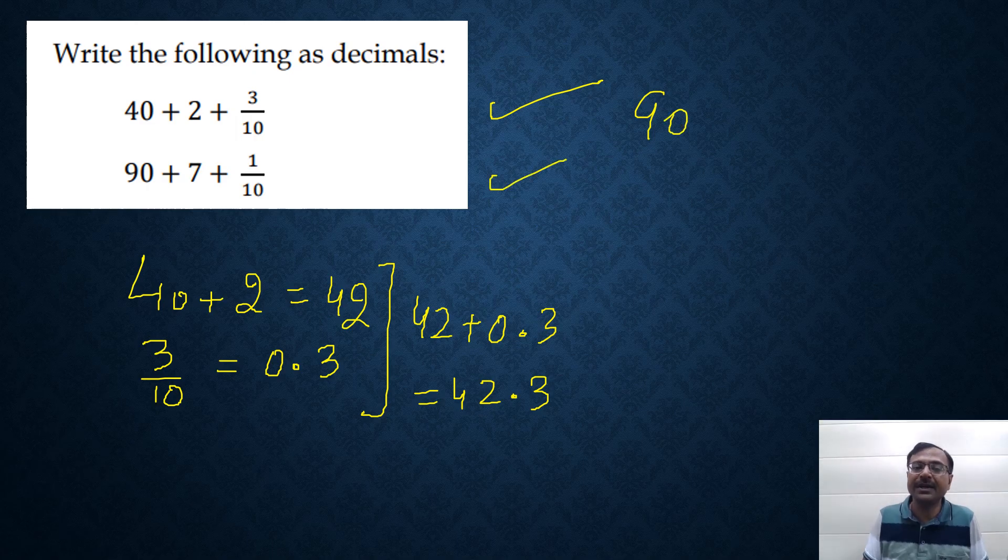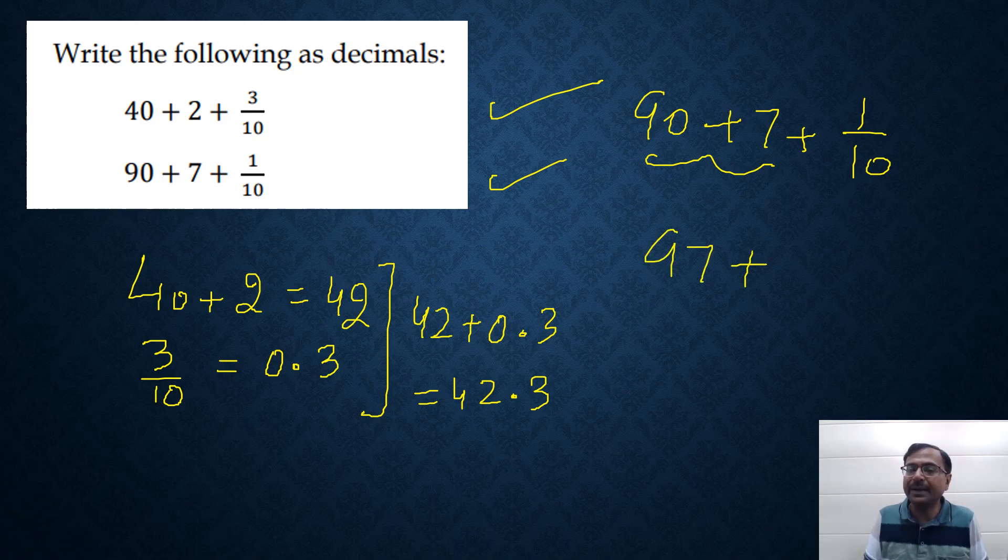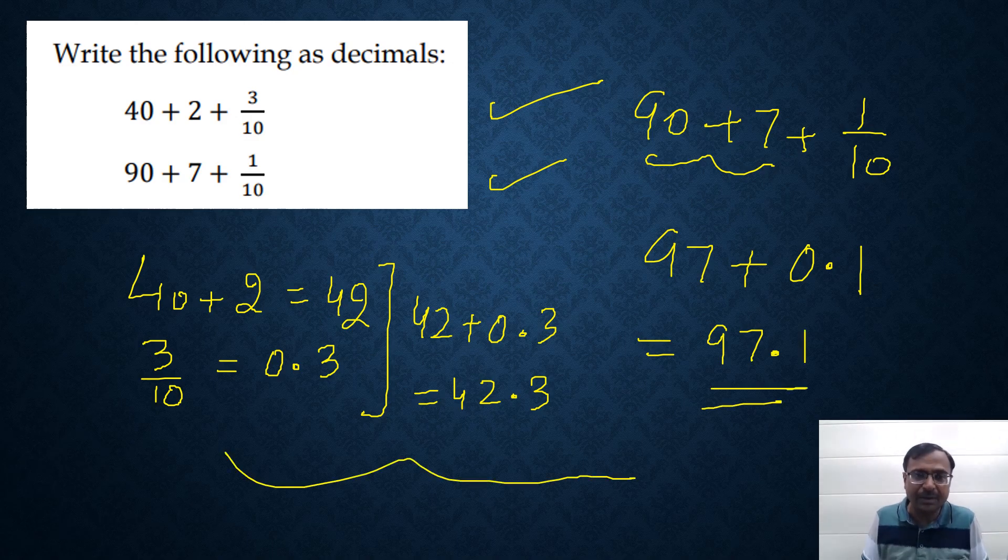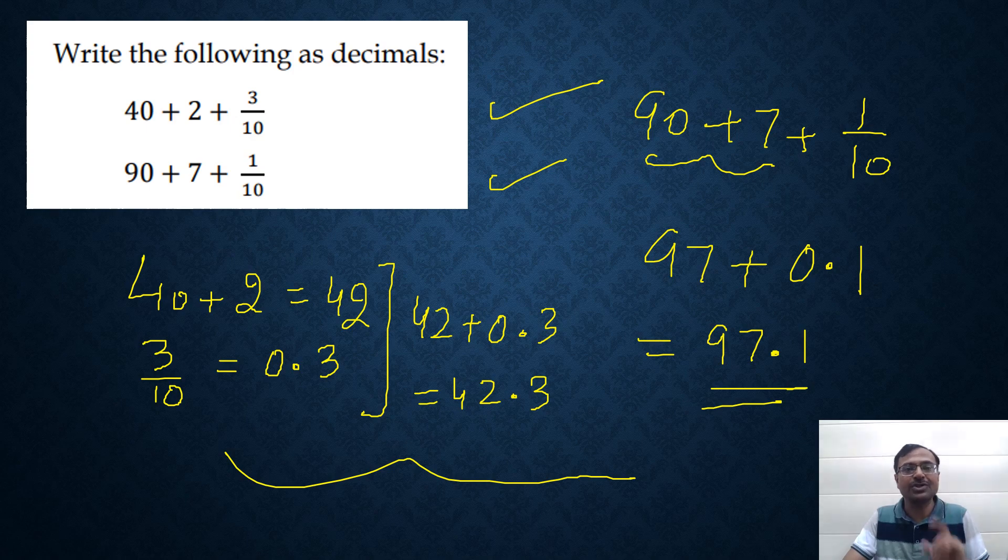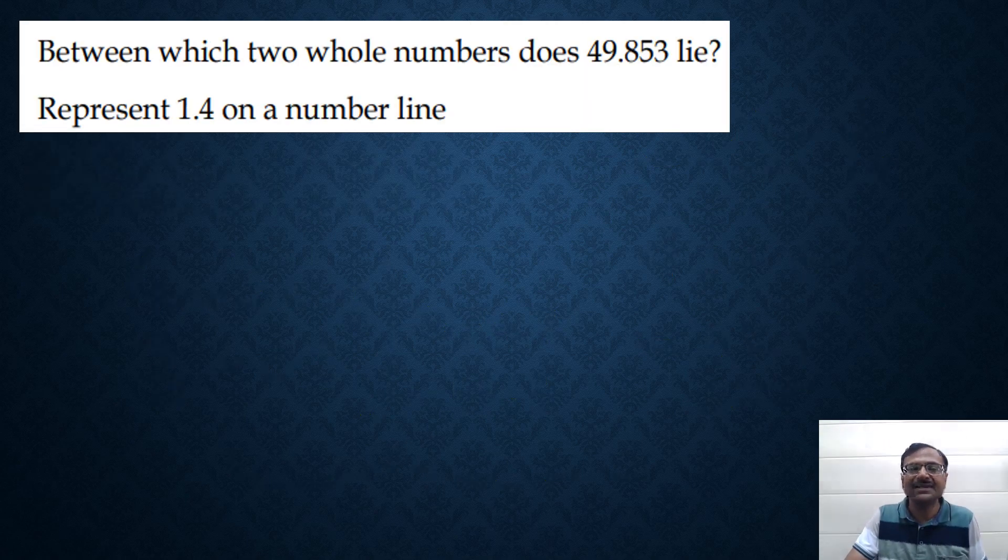Likewise, if you have the second question here, 90 plus 7 plus 1 tenth, you know that 90 plus 7 is 97 and 1 tenth is 0.1 and therefore, it is 97.1. You can have so many technical difficulties when you are handling such expansions. You will know that when you practice this concept through the practice PDF and that's why I keep on insisting you to go for the practice PDF after watching the video.